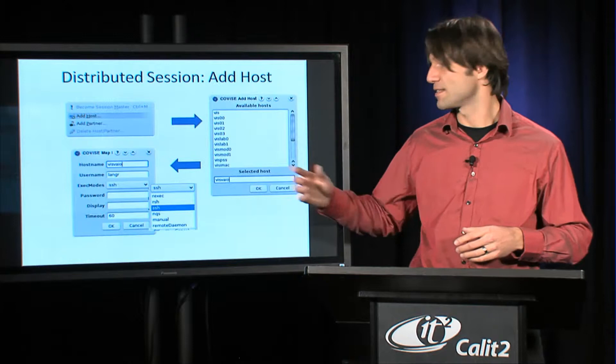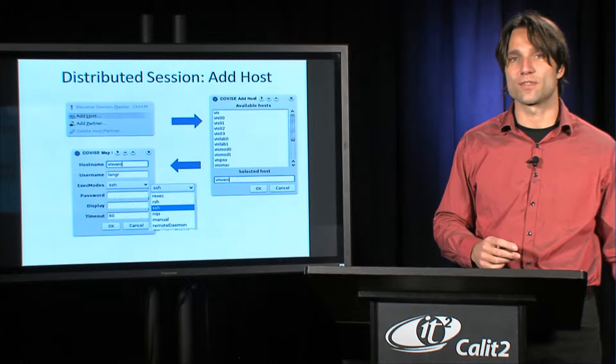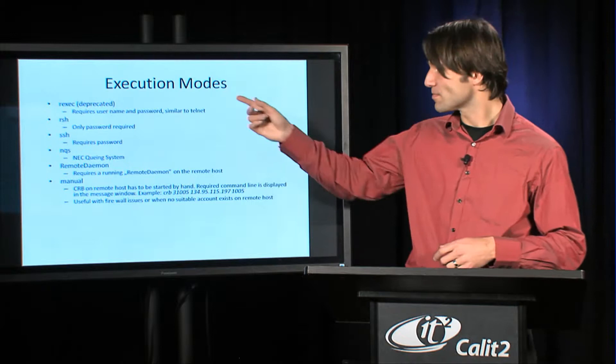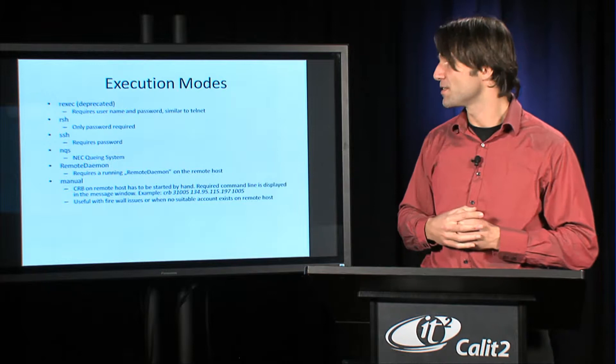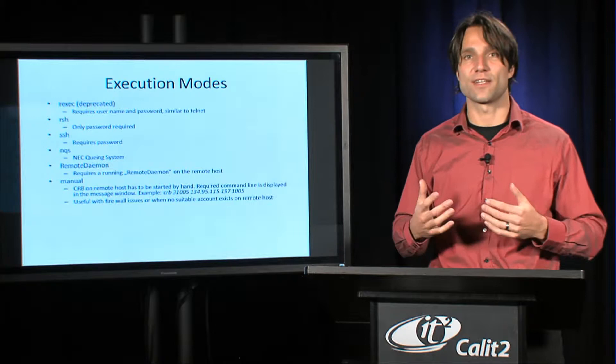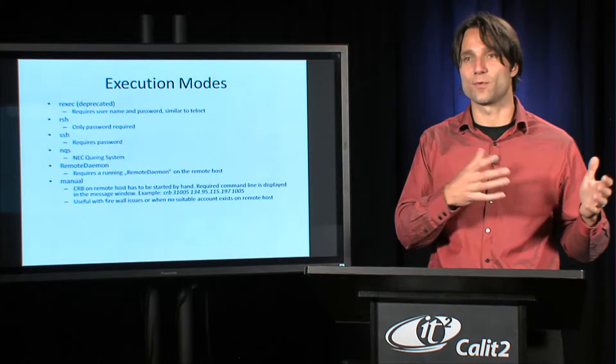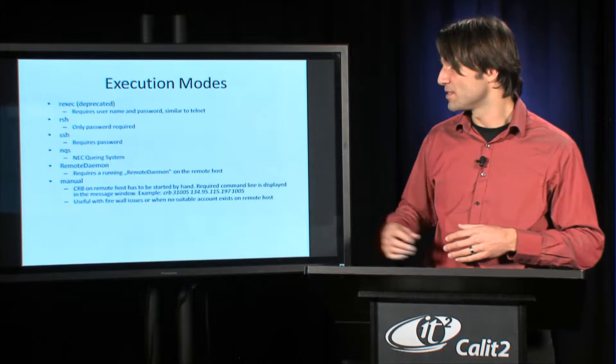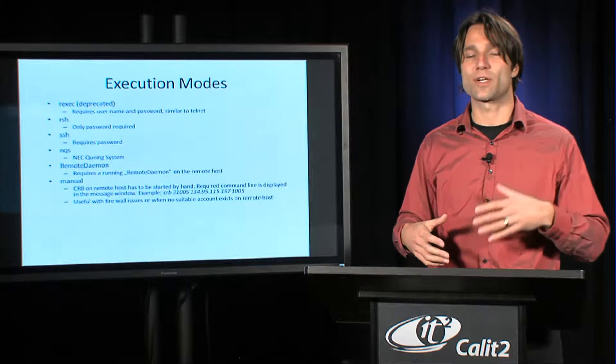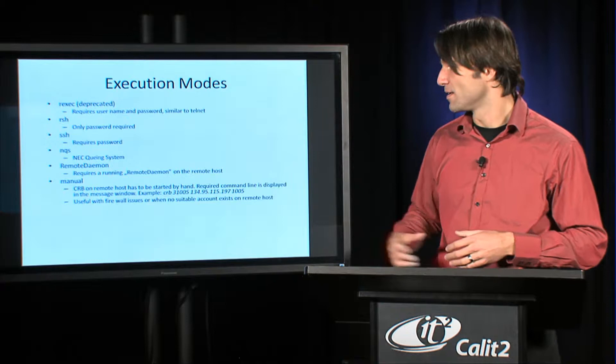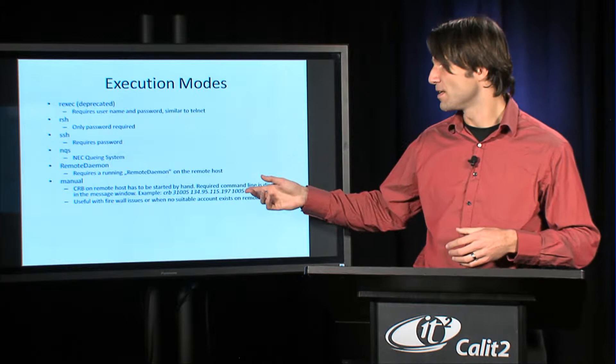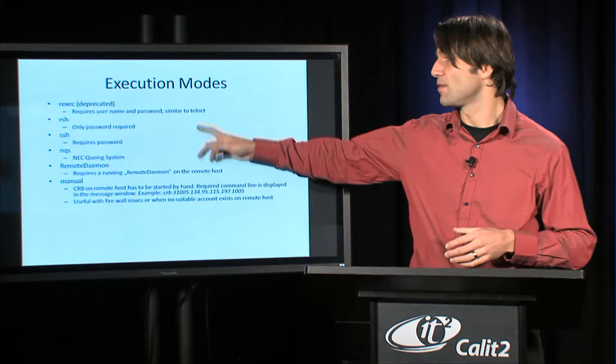The execution mode determines how your local machine logs into this remote host. There are various execution modes available. One is r-exec, which is a deprecated method that's rather old but still there for historical reasons. It requires a user name and password and logs in similar to Telnet. There's RSH, SSH, the NEC queuing system useful for NEC supercomputers, remote daemon, and a manual way to connect by running the CRB explicitly on the remote machine. This last method may be the only way if your firewall gives you headache with the other methods.